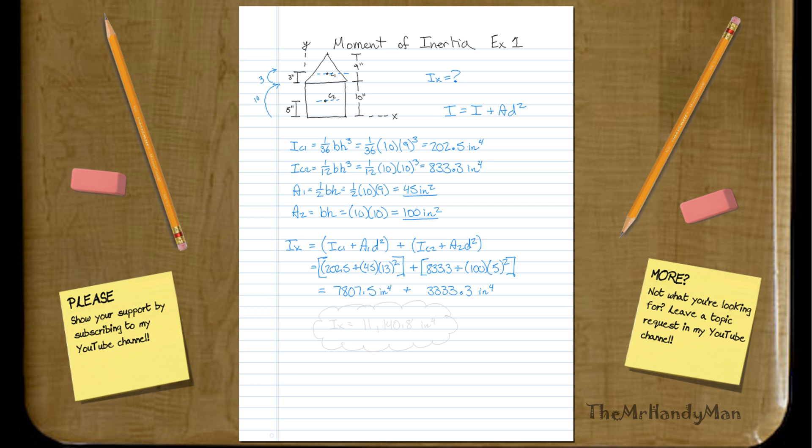And realize that even though there was more area underneath the rectangle, the fact that it was not further away makes less an effect on the inertia about the x-axis. So if we just do a linear combination, we add them up, you'll have eleven thousand, one hundred and forty point eight, and that's inches to the fourth power.